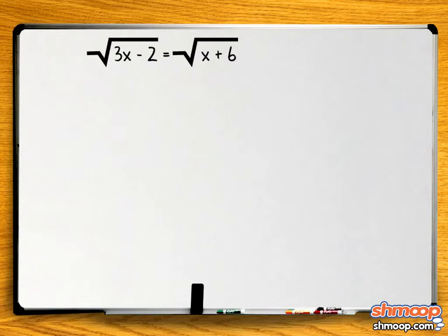Here's the first clue. Square root of 3x minus 2 equals square root of x plus 6. Solve for x.